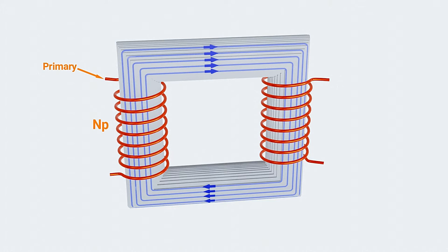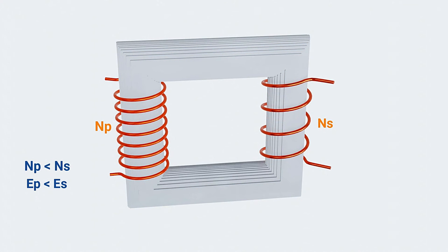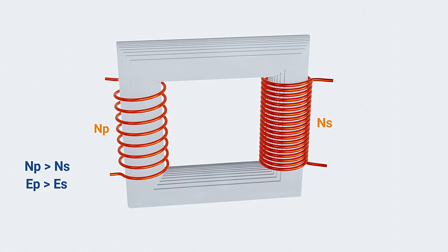When the number of turns in primary and secondary coils are the same, the EMF across them is also the same. Less turns in secondary coil reduces the output voltage. This type of transformer is known as step-down transformer. More turns increases the voltage. It is known as step-up transformer.